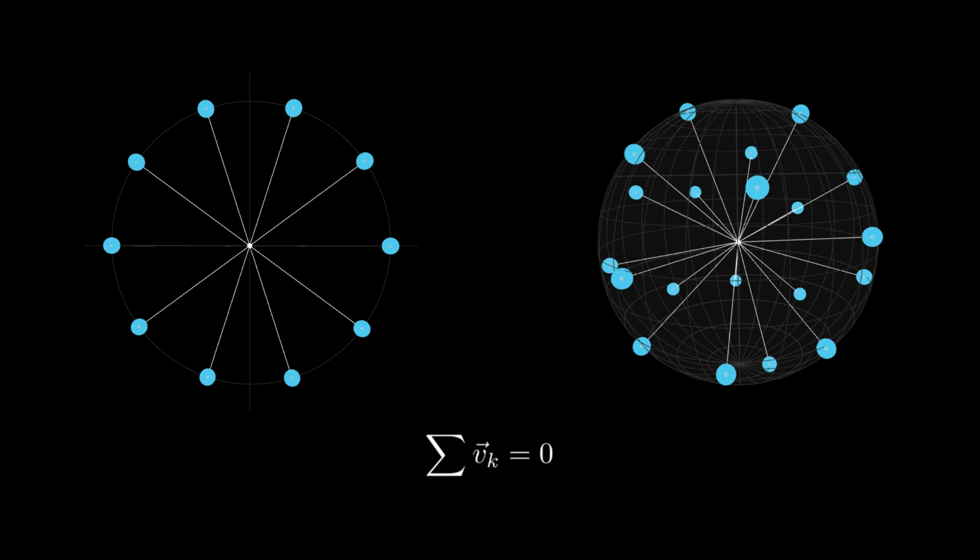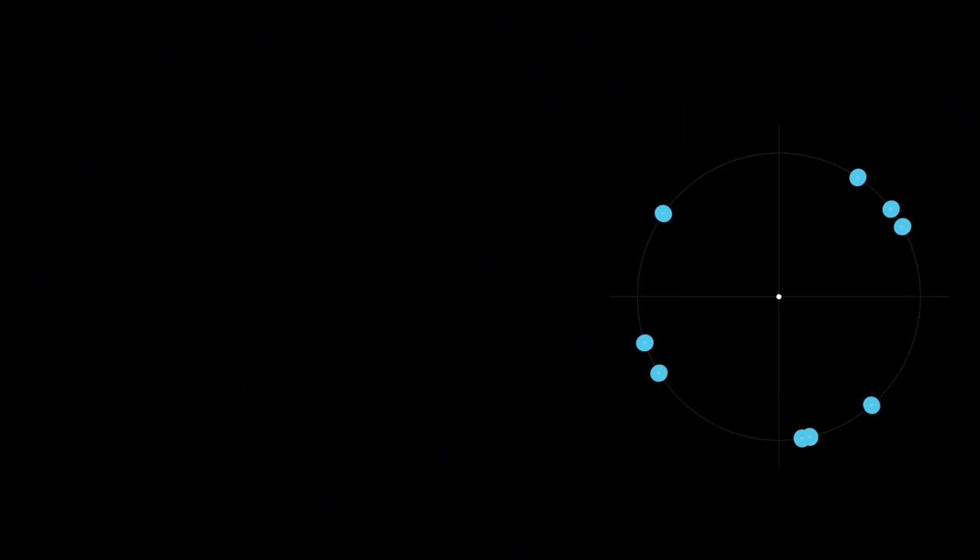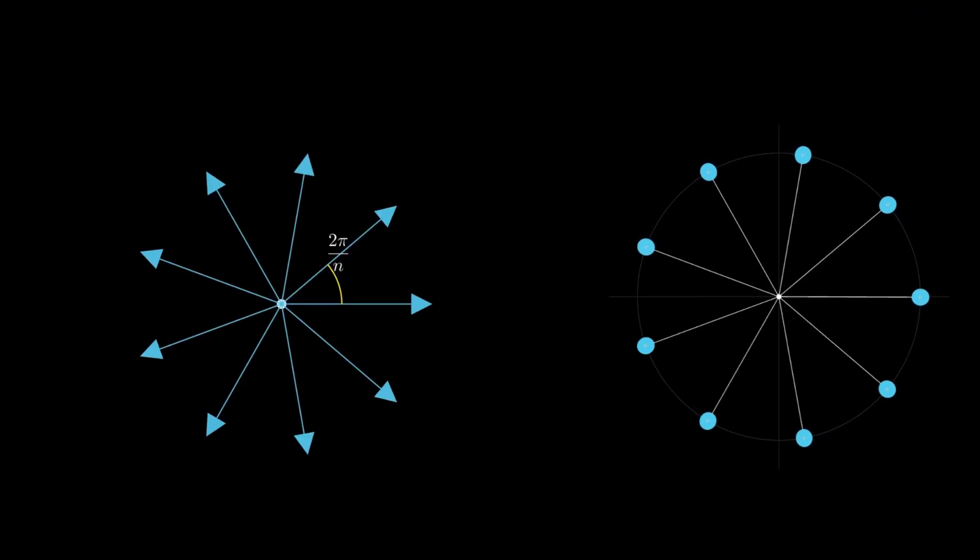Let's test this idea mathematically. We'll start simple in the flat two-dimensional space. If we confine our charges to a plane, they naturally arrange themselves evenly around the circle, and that gives us a perfectly symmetric vector configuration: equal length arrows equally spaced by an angle of 2π/n and pointing radially outward.